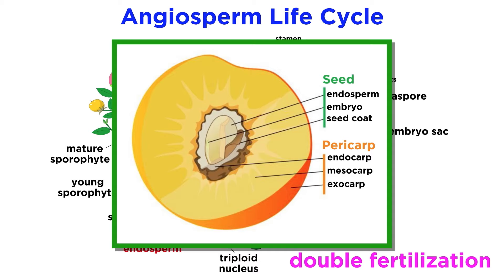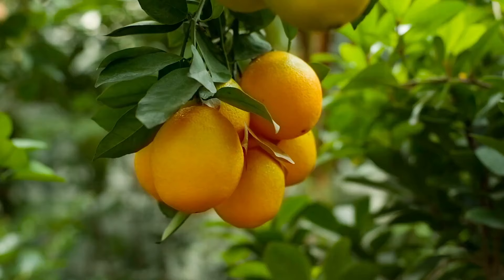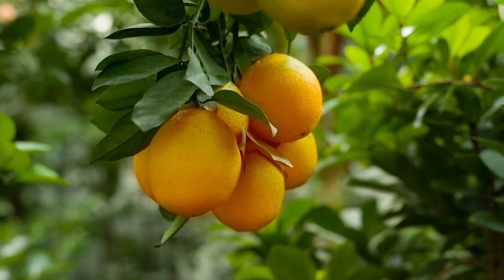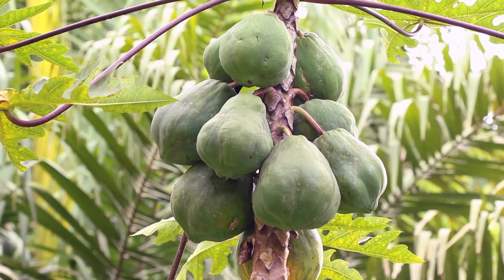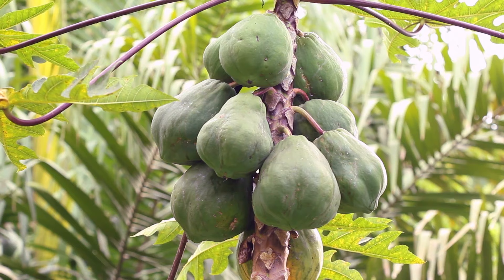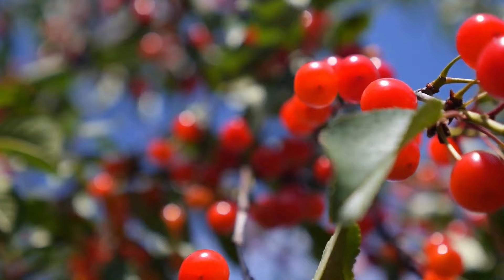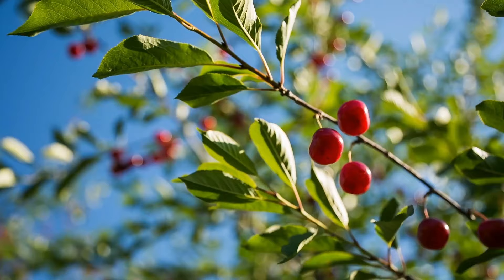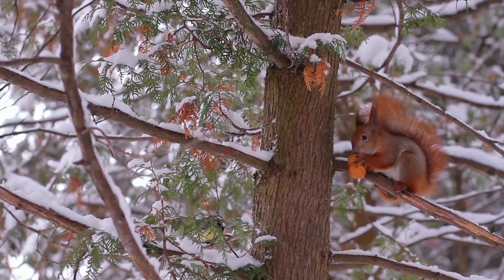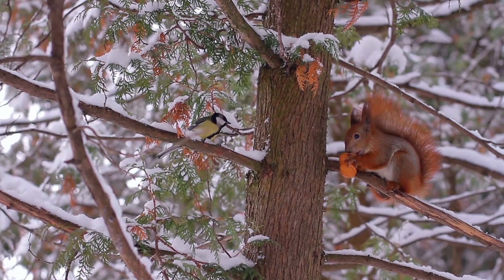After double fertilization generates the zygote and endosperm, the ovary surrounding the zygote swells into a protective coating called a pericarp, which most of us know of as a fruit. This is a major difference from the naked seeds of gymnosperms. Angiosperm fruits come in a huge variety of shapes and sizes, and the shape is usually specialized for the kind of seed dispersal a plant relies on. For instance, bright red berries will attract the attention of birds, who will then ingest the berries and carry the seeds for miles before depositing them with their fecal material.